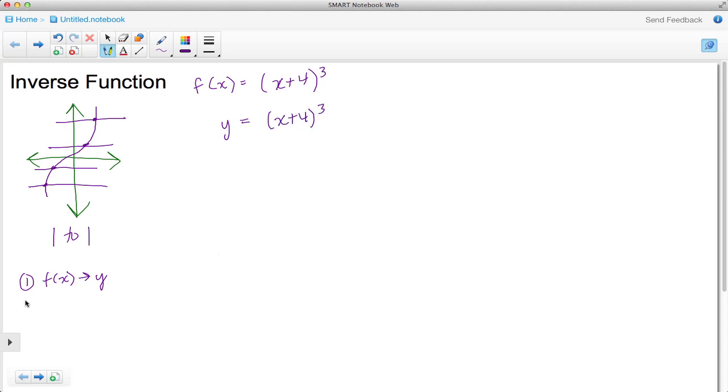So here I have y equals the quantity x plus 4 taken to the third power. Second thing we have to do is to go ahead and swap those x's and y's. So this y becomes an x and this x becomes a y, leaving everything else in place.